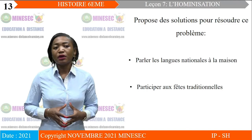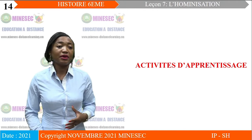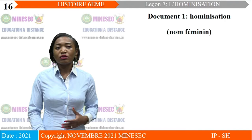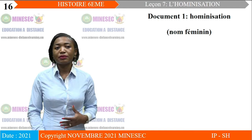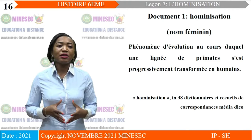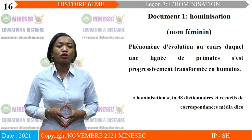Cette leçon permet à l'apprenant d'identifier les différentes étapes de l'hominisation afin de maîtriser la culture. Les différentes activités d'apprentissage reposent sur plusieurs éléments. La première séquence d'apprentissage est les étapes d'évolution. Nous avons le premier document intitulé « L'hominisation ». Analysons le document 1 : phénomène d'évolution au cours duquel une lignée des primates s'est progressivement transformée en l'humain. Source : dictionnaire et recueil de correspondances médias.